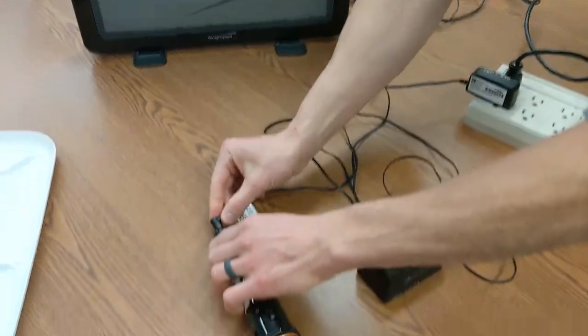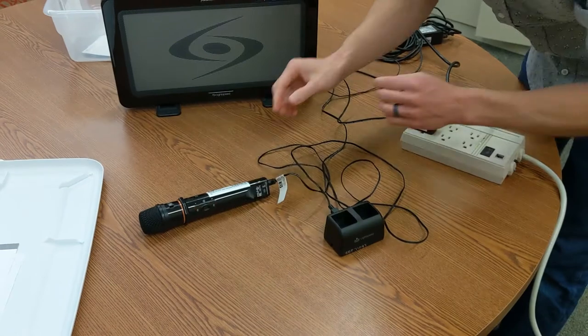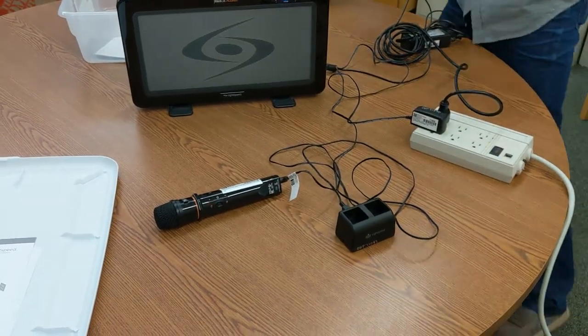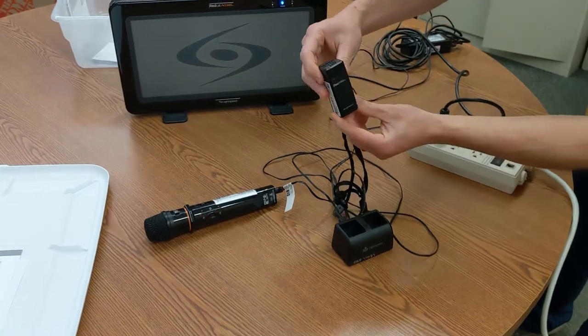This gets plugged into the bottom of the pass-around microphone. You should see a solid set of red lights showing up. Right here, you see that they're blinking. This means that the battery needs to be replaced.